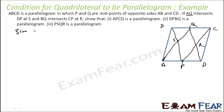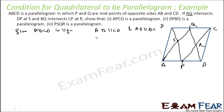Given: ABCD is a parallelogram. That is, AB is parallel to CD, and AD is parallel to BC. Also, since ABCD is a parallelogram, AB is equal to CD, and AD is equal to BC — opposite sides of a parallelogram are equal and parallel.